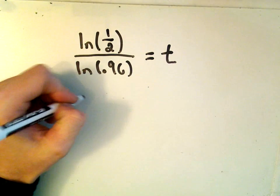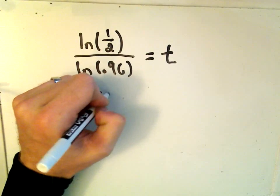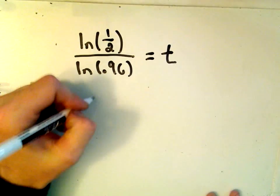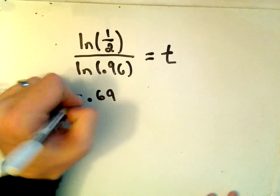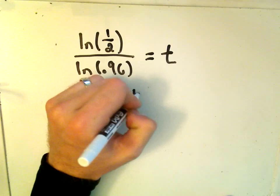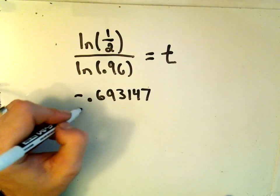So ln of 1 half, that's roughly equal to negative 0.693147. That's good enough for me.